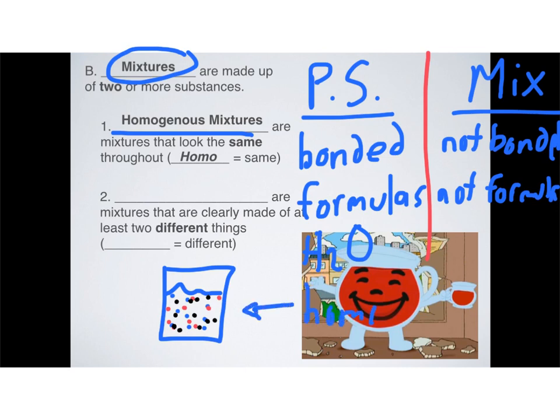Most of the things we drink every day are probably examples of homogeneous mixtures — juice, Kool-Aid, things like that. They're made up of many different things that are not bonded to each other, and there's no simple formula for them. That's the key difference between a mixture and a pure substance: pure substances have formulas and are chemically bonded, while mixtures are just mixed together — not bonded at all.